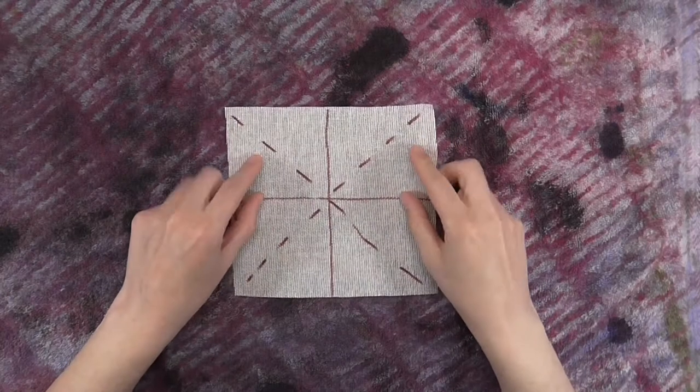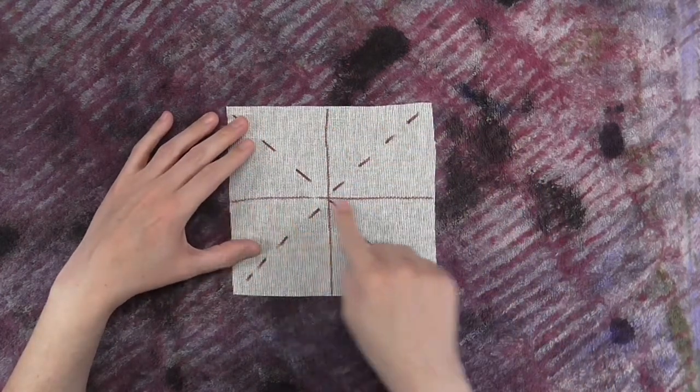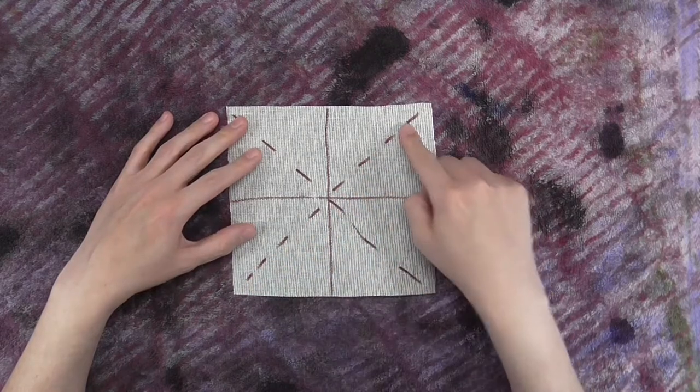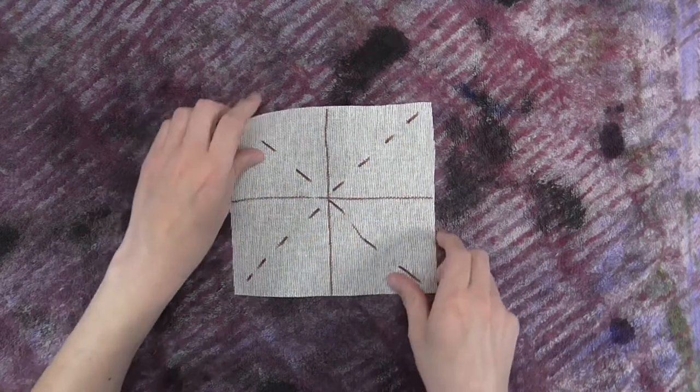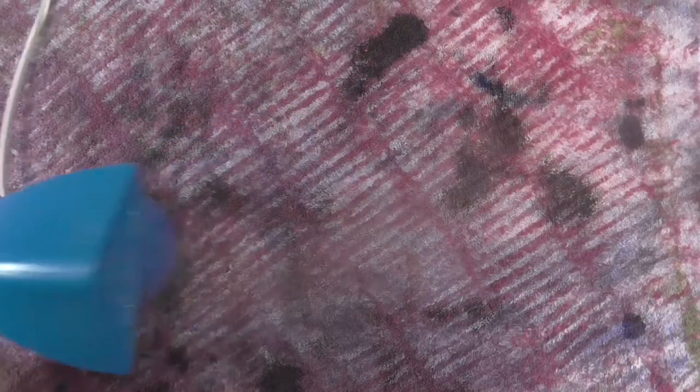When blocking Buckram, you are mainly going to be pulling on the bias. I have drawn the grain lines on this sample just so you can see them. The dashed lines are the bias. You do not need to mark your own grain lines on your Buckram. Steam fogs up the camera, so I will be steaming just off camera.